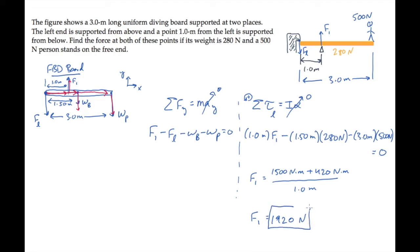Now knowing the value for F1, we can come back to our sum of forces equation, solve it for the force on the left hand side, substitute all the known values, and find that the other force we were asked to find, FL, is 1140 Newtons.